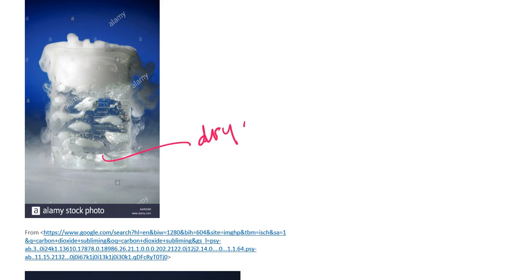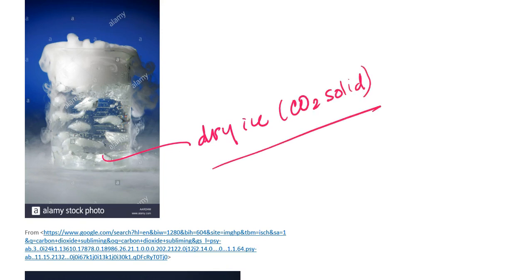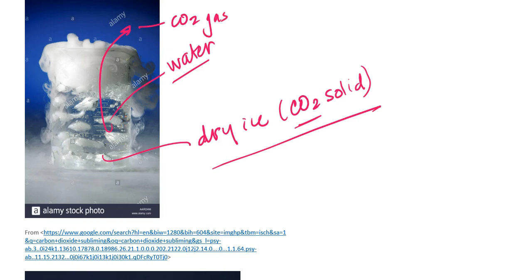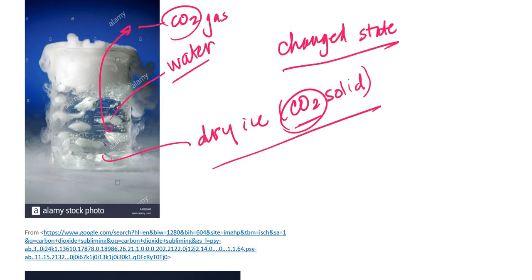Here at the bottom is dry ice. Dry ice is really just carbon dioxide in its solid form. Inside the beaker is also some water. The water is heating up the solid carbon dioxide so that basically I'm giving off carbon dioxide gas. At the start of the process I have carbon dioxide, and at the end of the process I have carbon dioxide again. What I've changed is the state of the carbon dioxide, but I haven't changed the identity — I still have carbon dioxide before and after the process.